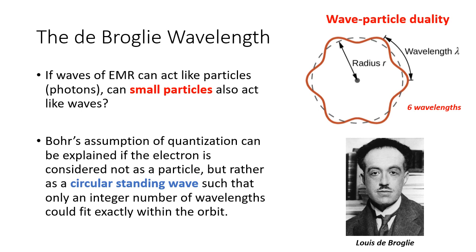A scientist named Louis de Broglie asked: if waves can act like particles, why can't small particles such as electrons act like waves? He suggested that the electron be considered not as a particle but as a circular standing wave. The wave could only have an integer number of wavelengths fitting within the orbit. Thinking about the electron as a standing wave naturally leads to quantum numbers, since only waves for which a half-wavelength repeated exactly a whole number of times can occur. Going around the circle, we had to have six whole wavelengths.